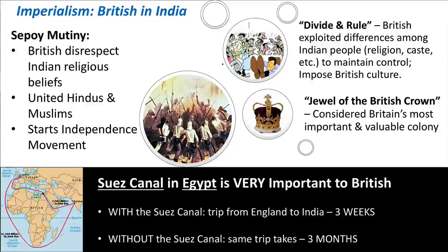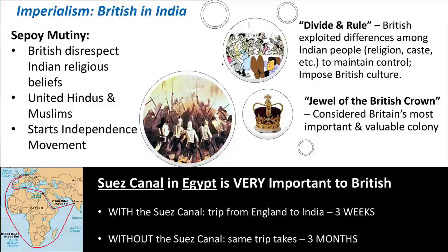There was also animosity between Hindus and Muslims, and Hindus and Muslims wouldn't get along with the Sikh population either. There were so many differences in language, religion, and caste that all these groups just wouldn't work together. They were not going to bond together, and that made ruling India as an imperialist outsider much easier.